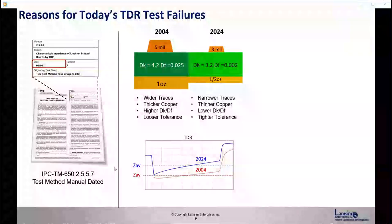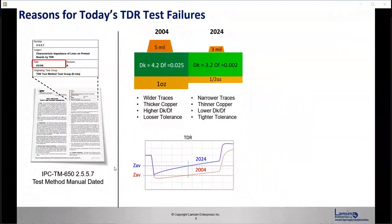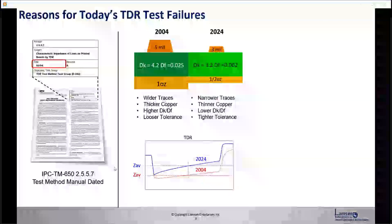Fast forward 20 years, we're now having narrower traces, thinner copper, lower DK/DF and tighter tolerances. Back in 2004, typical TDR shown in red would be typically flat due to the geometries of the day. Today, with the narrow line widths and lower DK/DFs, we see a slow monotonic rise or steeper than it used to be compared to 2004.